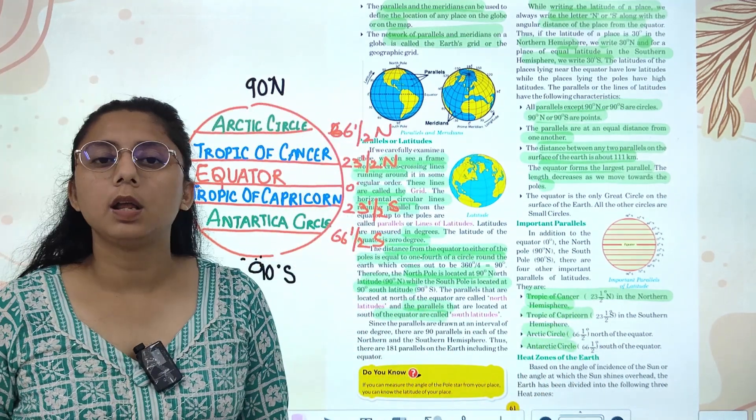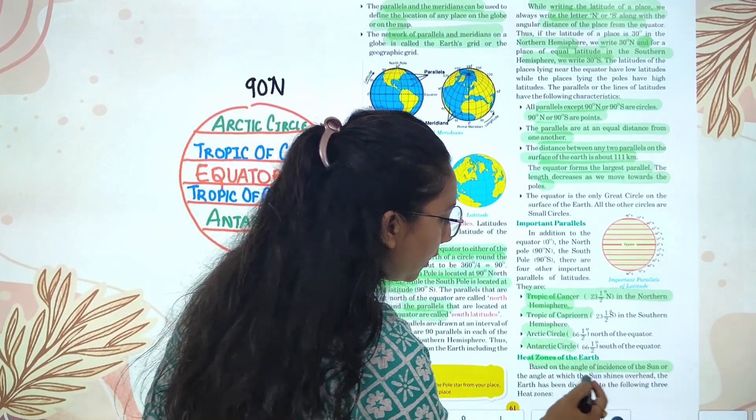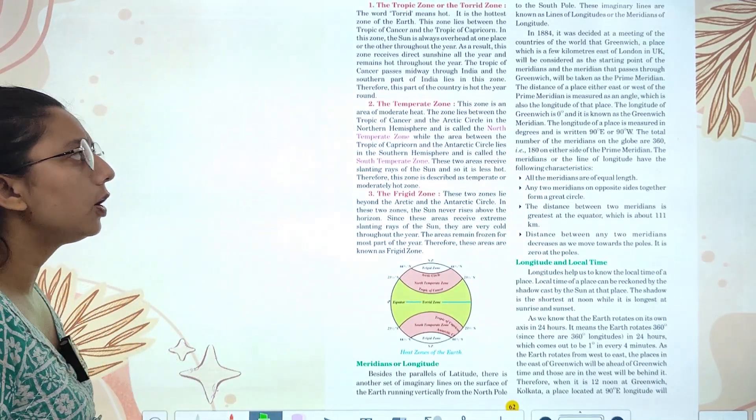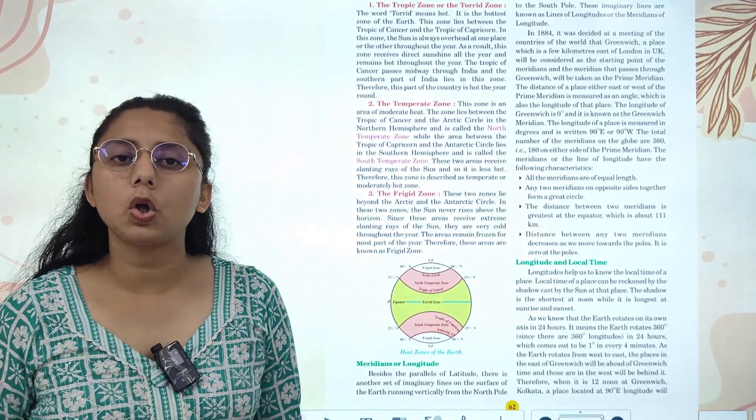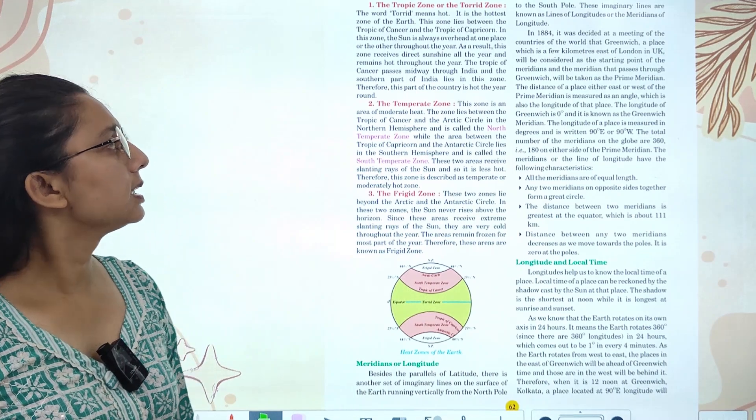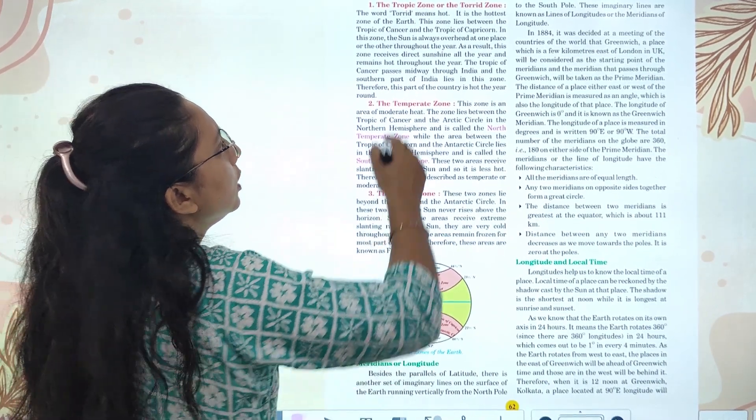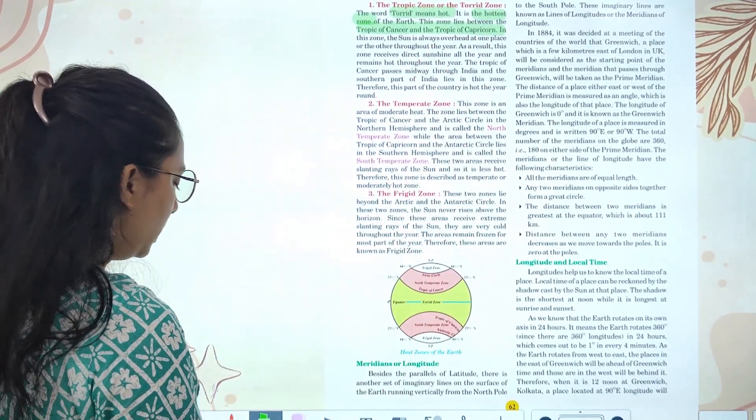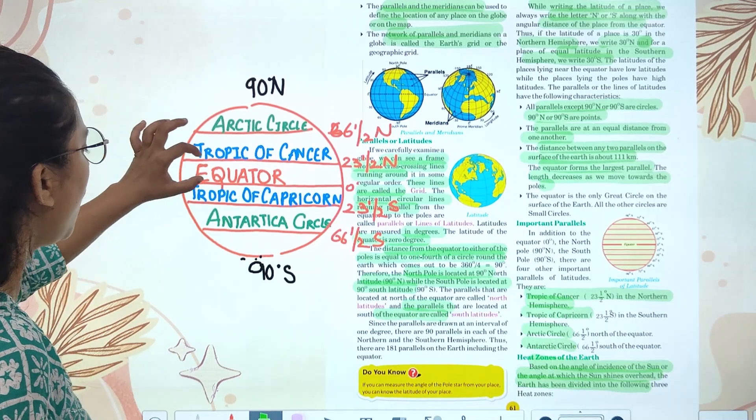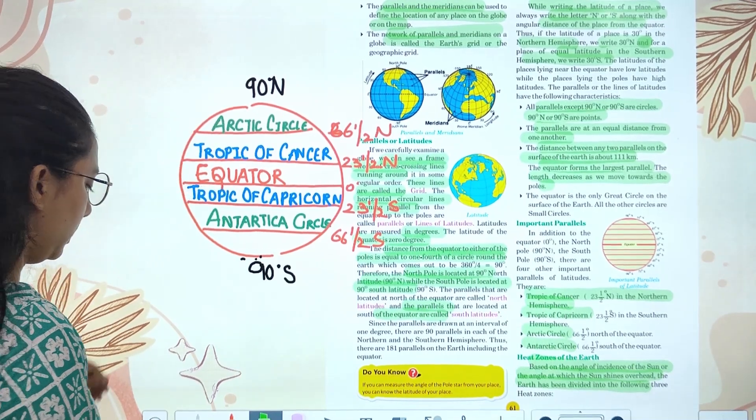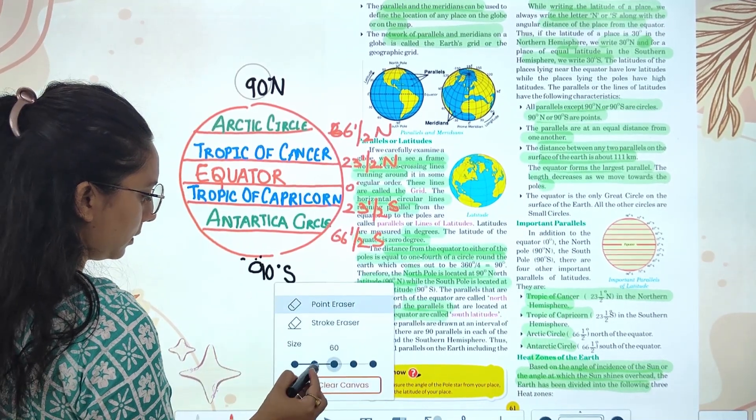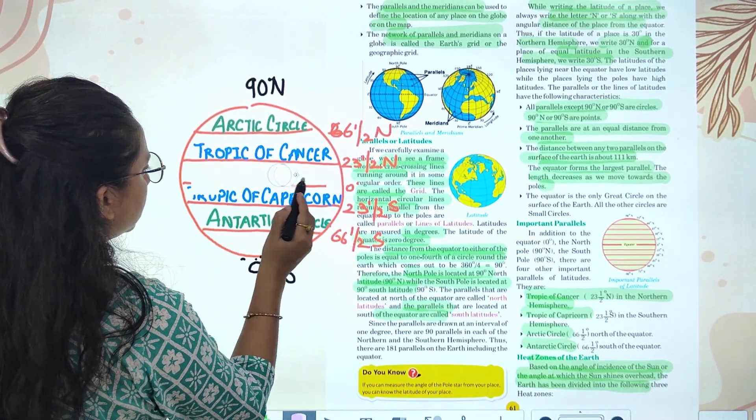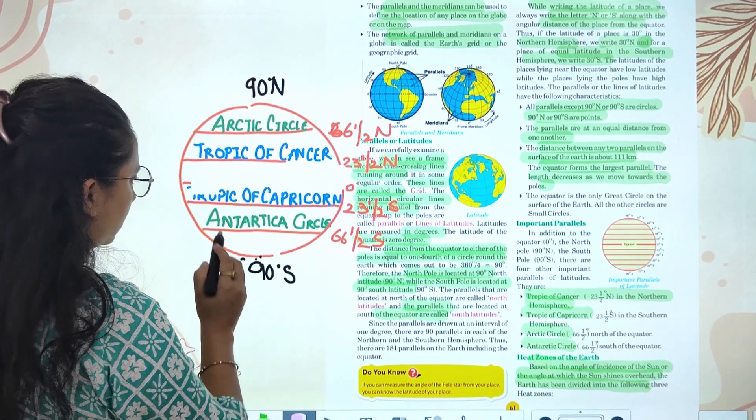Now let's talk about heat zones. Based on the angle of incidence of sun rays, the Earth has been divided into three heat zones: tropical or torrid zone, temperate, and frigid zone. First, let's talk about torrid zone. The torrid zone is the hottest zone, lying between the Tropic of Cancer and Tropic of Capricorn. This is the tropical or torrid zone.